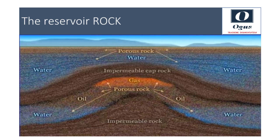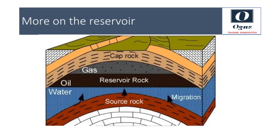The oil and gas thus formed collect, along with water, in the microscopic pore structure of the rock. The rock where the oil and gas is initially formed is called the source rock. After formation, the oil and gas migrate through the microscopic pores of the rock layer and end up in the reservoir rock, which is another layer of porous sedimentary rock.